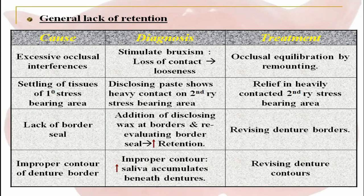For general lack of retention, causes are excessive occlusal interferences, settling of tissues of primary stress bearing areas, lack of border seal, and improper contour of the denture border. For excessive occlusal interference, diagnosis is loss of contact and loosening of the denture; treatment is occlusal equilibration by remounting. For settling of tissues of primary stress bearing areas, disclosing wax shows heavy contact on secondary stress bearing areas; treatment is relief in those heavily contacted areas. For lack of border seal, addition of disclosing wax at the borders and re-evaluating border seal increases retention; treatment is revising the denture borders. For improper contour, increased saliva accumulates beneath the denture; treatment is revising the denture contours.